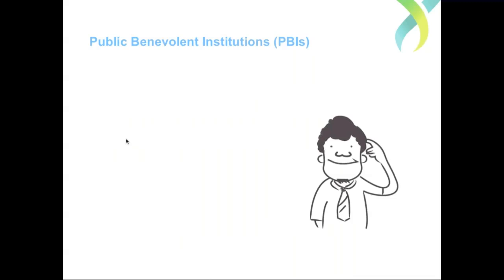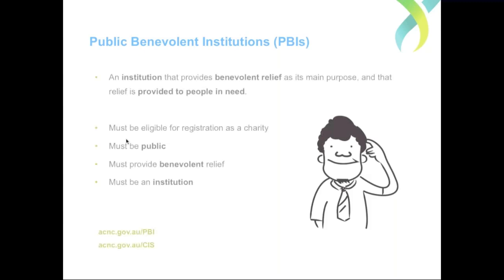Let's look at the first category: public benevolent institutions, or PBIs. A PBI is an institution that provides benevolent relief as its main purpose, and that relief is provided to people in need. First, it must be eligible for registration as a charity — having an ABN, only charitable purposes, and being not-for-profit. Beyond that, it must satisfy three additional aspects: it must be public, provide benevolent relief, and be an institution.